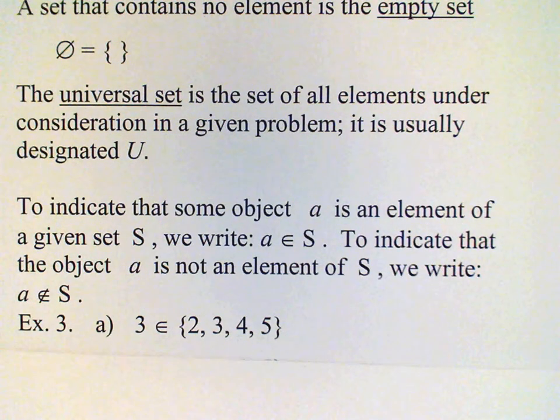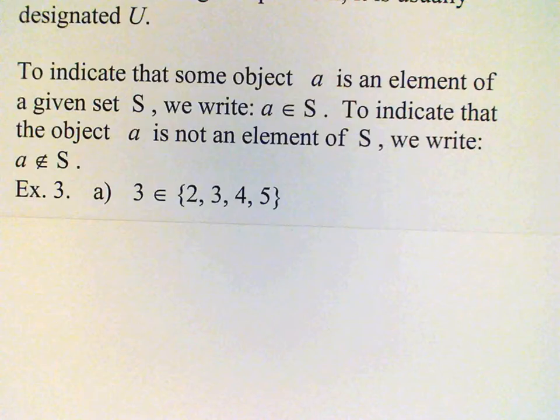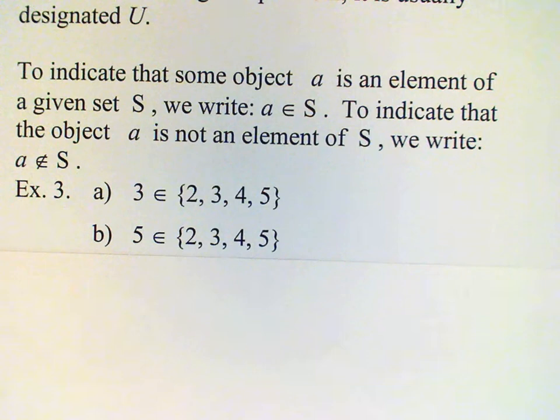So for example, we have this set consisting of the numbers 2, 3, 4, and 5. 3 is clearly an element of that set. 5 is also clearly an element of that set. On the other hand, 6 is not an element of that set.